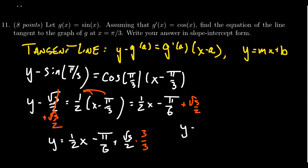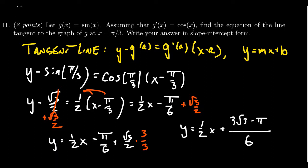This would then give us y equals 1 half x plus 3 root 3 minus pi all over 6. So if you want to write it as a single y intercept, that's perfectly fine.